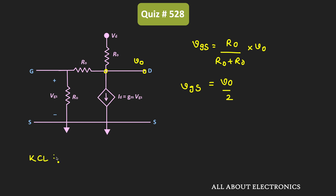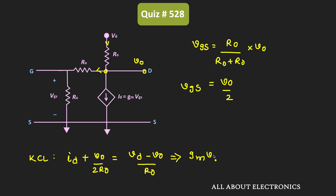Applying KCL at this node, we can write: id plus v0 divided by (2·r0) equals (vd minus v0) divided by r0, where id equals gm times vgs and vgs equals v0 divided by 2. Substituting, we get: gm times (v0/2) plus v0/(2·r0) plus v0/r0 equals vd/r0.